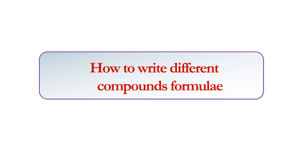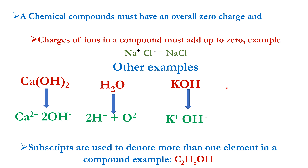We now look at how to write different compound formulae. All compounds must have an overall zero charge, meaning the charges of ions in any compound must add up to zero. For example, in sodium chloride, sodium has a positive charge and chlorine has a negative charge — positive and negative equal zero. That's why sodium chloride exists as a neutral compound.